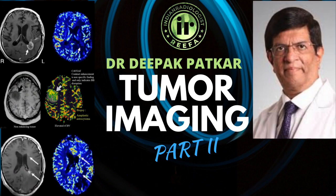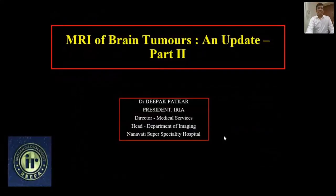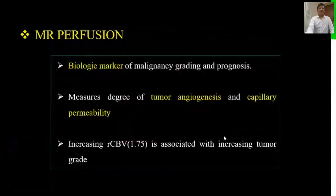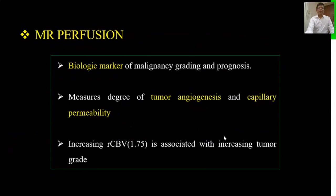I'll be continuing from where we left in part one of MRA brain tumor imaging and update. In the first part, we talked about how DTI and MR spectroscopy are useful as add-ons to structural imaging in brain tumor imaging. Today, we'll look at perfusion, ASL imaging, and also functional BOLD imaging. Let's start off with MR perfusion first.